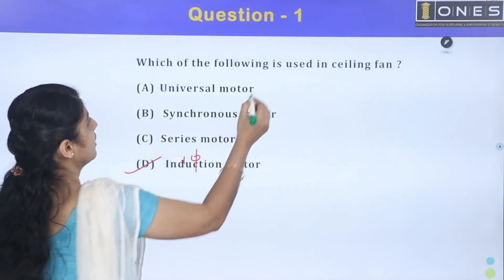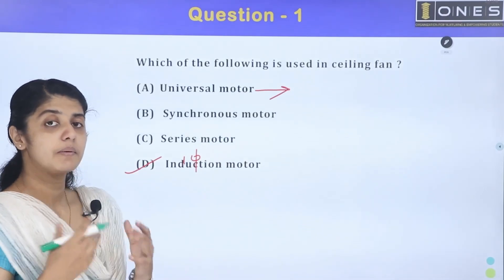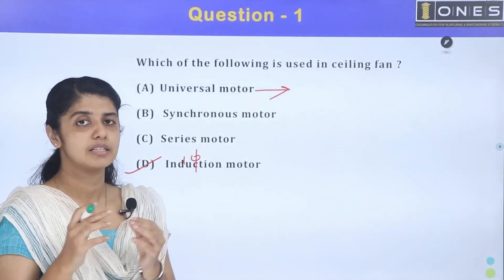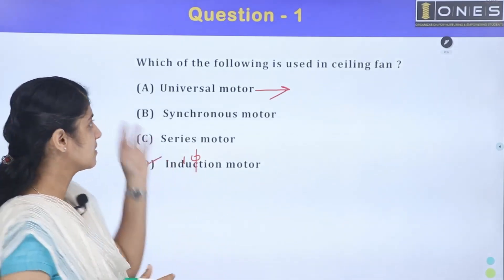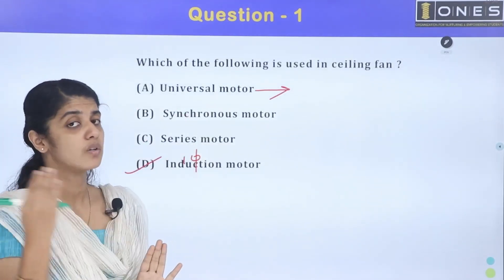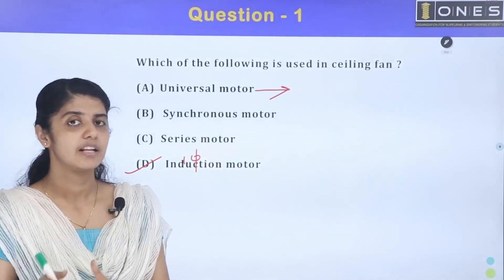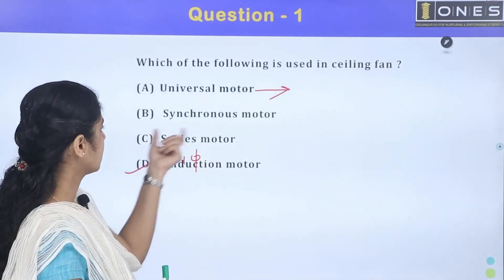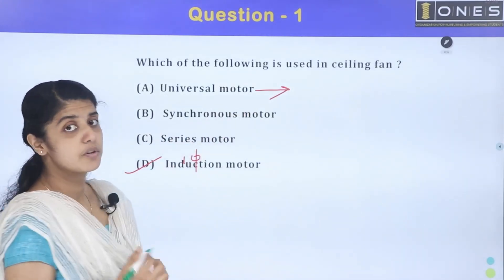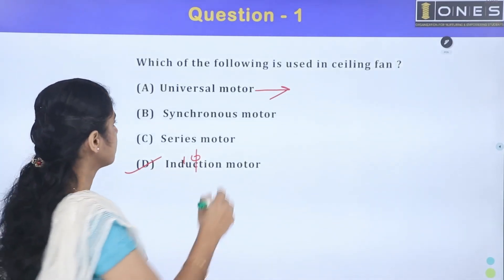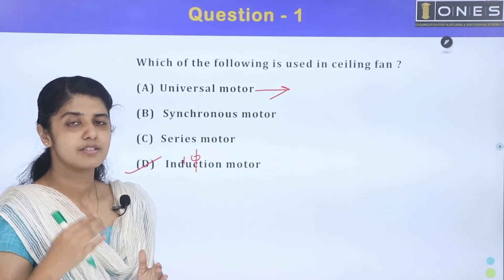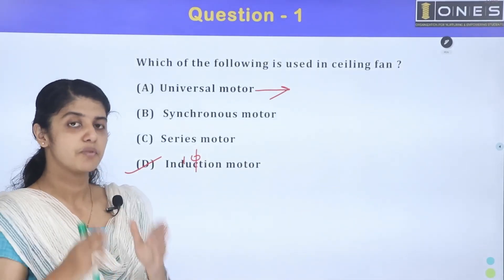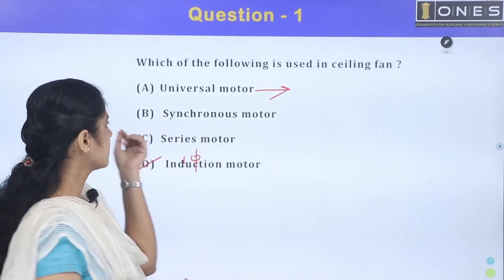Universal motor is used in domestic applications like grinders or sewing machines. Universal motor can run on AC and DC. The single phase induction motor is a fixed speed motor used in constant speed rotation applications.